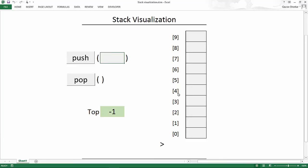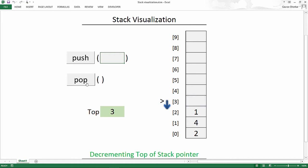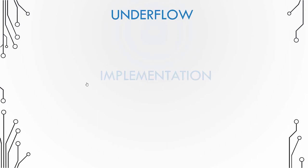Let us see a possible implementation of the pop operation. We have a stack implemented as an array with a pointer to the top element. To pop an element: first remove the element from the top of the stack, then decrement the top pointer to point to the second-last element, which is now the last element. The value deleted from the stack is usually returned from the function.